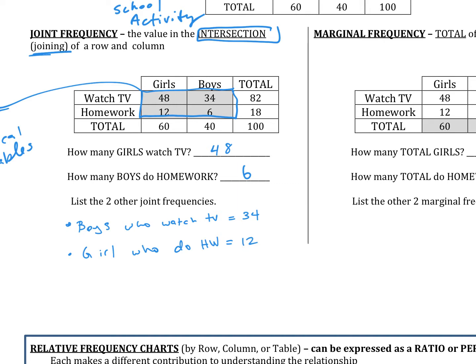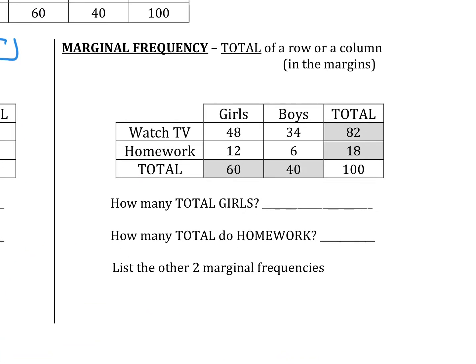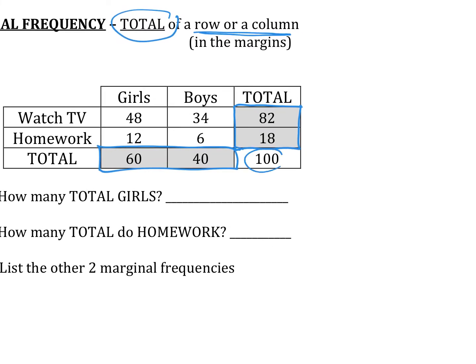Now let's talk about marginal frequency. Marginal frequency focuses on the total in a row or column. Think of the word margin — the edges of a page where the main text is not included. Same idea here: we're focusing on the totals that occur in the columns or the rows. It is not a combination of both categorical variables; it just focuses on one of them. The row totals and column totals are marginal frequencies. The overall total of 100 in the corner is neither joint nor marginal — it's just the grand total.